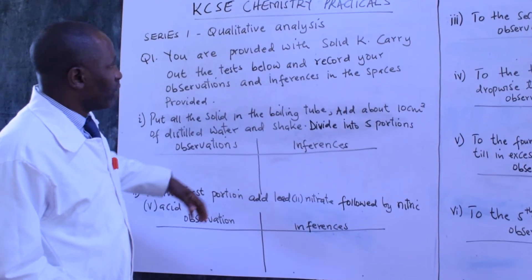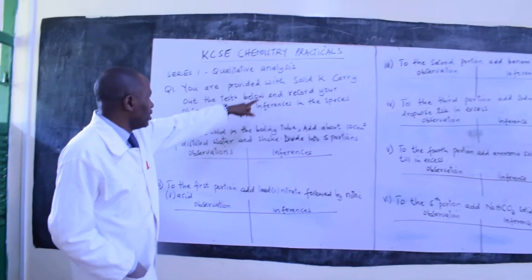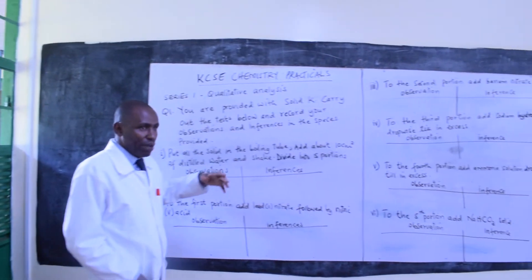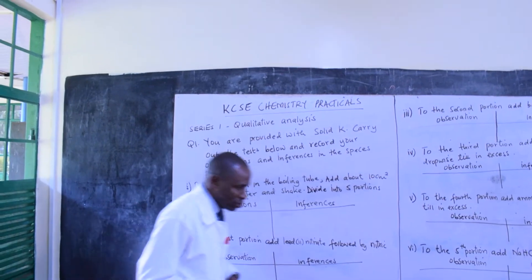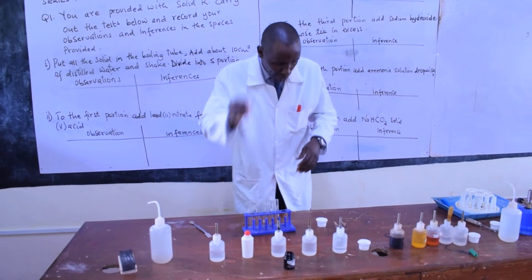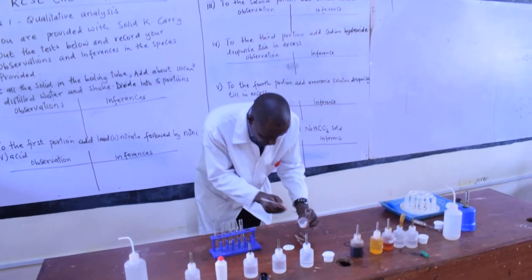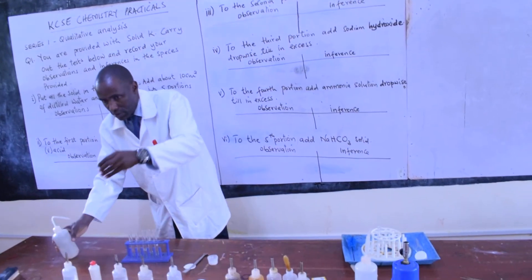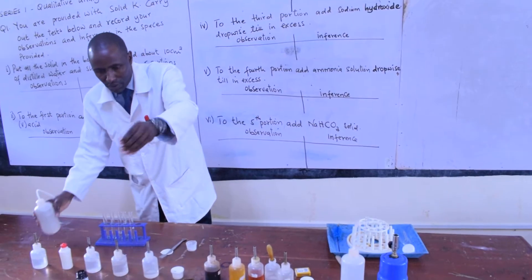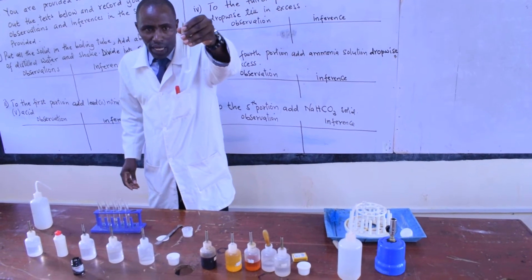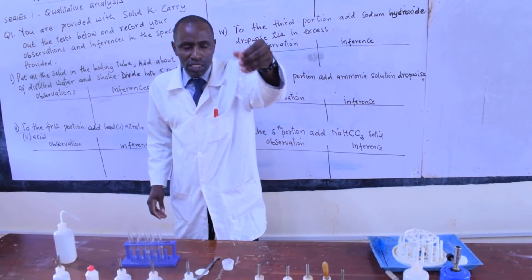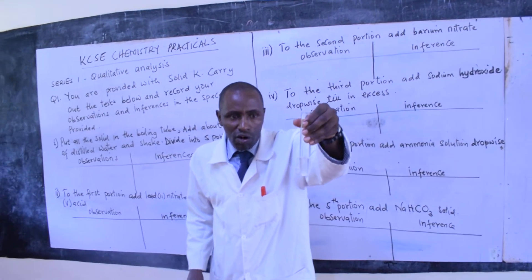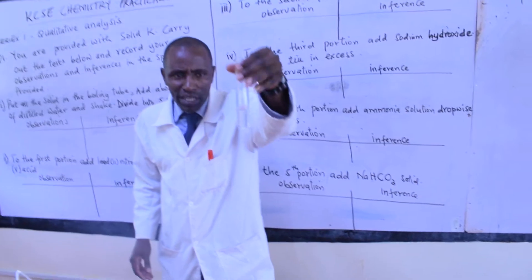We are given a solid K, and the first instruction is to add water to it. It's not automatic that it will dissolve, but it may dissolve — you are supposed to add the water to it. So, we have our boiling tube here and we have solid K. We are going to add the water. Whenever we add the water, what we need to observe is whether the solid dissolves or otherwise. It could dissolve, not dissolve, or dissolve partially. As you can see here, my solid has dissolved.